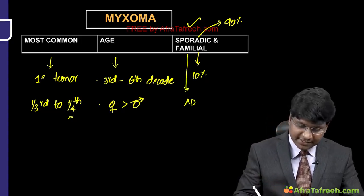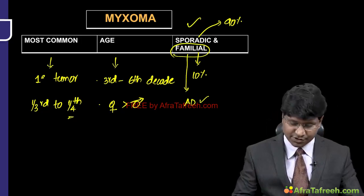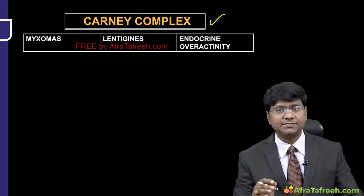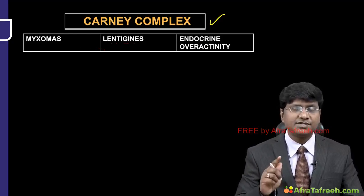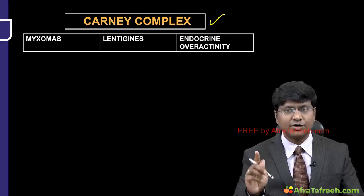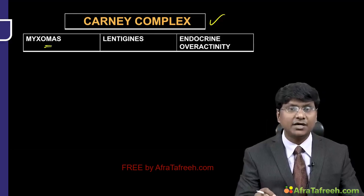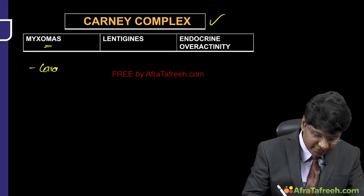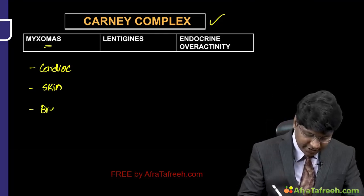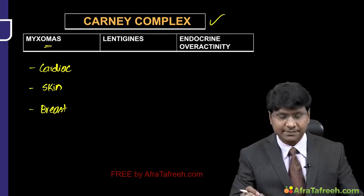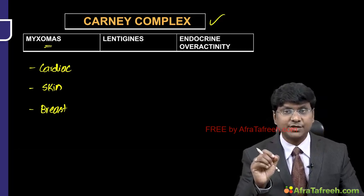Familial transmission is seen in 10 percent of individuals. The clinical entity with familial transmission is the Carney complex — a type of atrial myxoma with autosomal dominant transmission. Carney complex is characterized by a triad: first, myxomas — which may be cardiac myxomas, cutaneous myxomas, or myxomas originating from the breast (mammary gland); second, lentigines, which are hyperpigmented patches in the skin, and pigmented nevi.